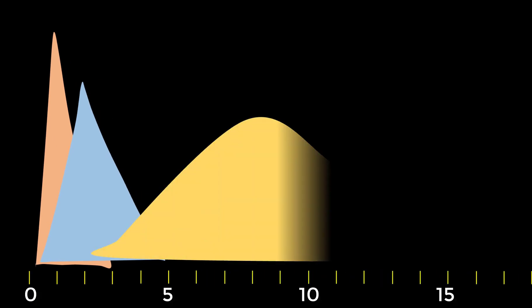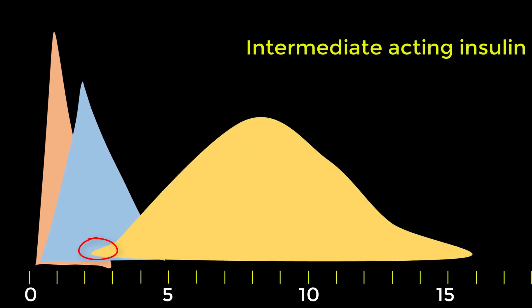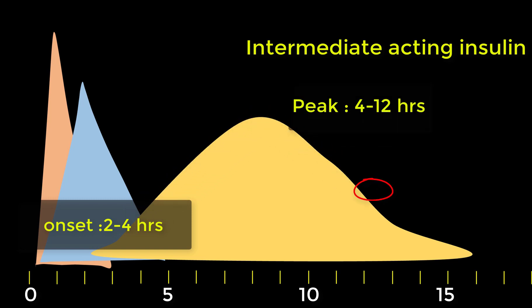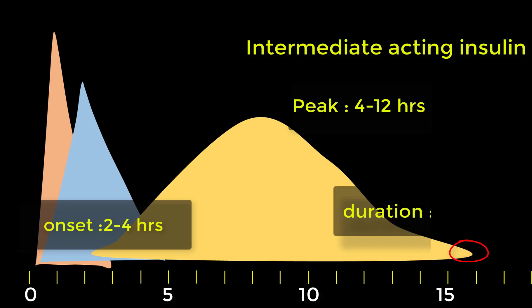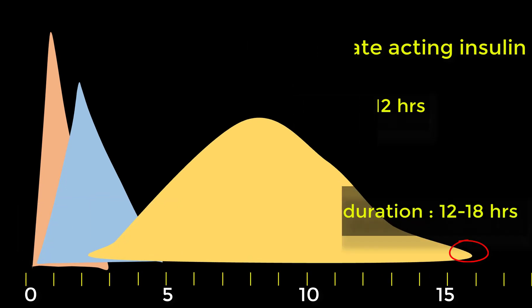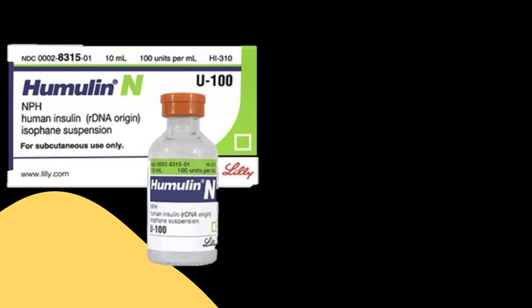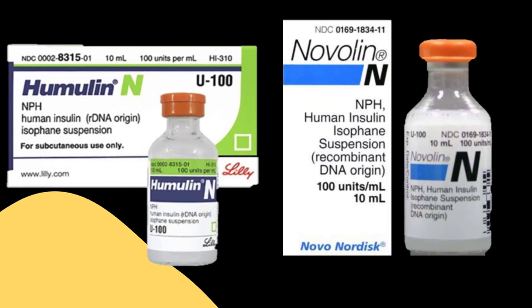Intermediate-acting insulin reaches the bloodstream in about two hours after injection, reaches its maximum effect about eight hours later, and continues to work for about 16 hours. Intermediate-acting insulin is known as NPH, and trade names are Humulin N and Novolin N. As you can see, intermediate-acting insulin ends with the letter N.